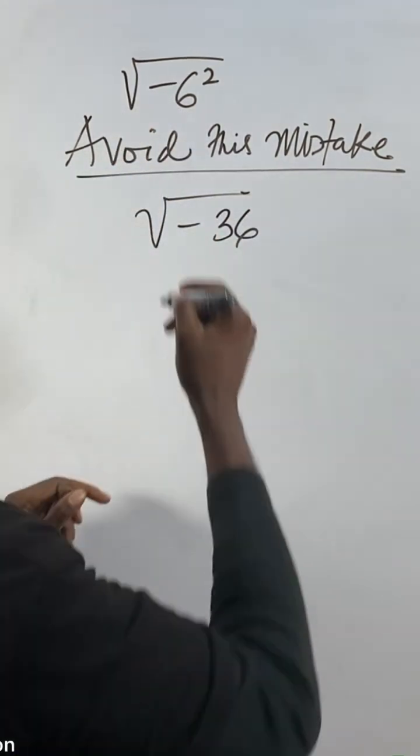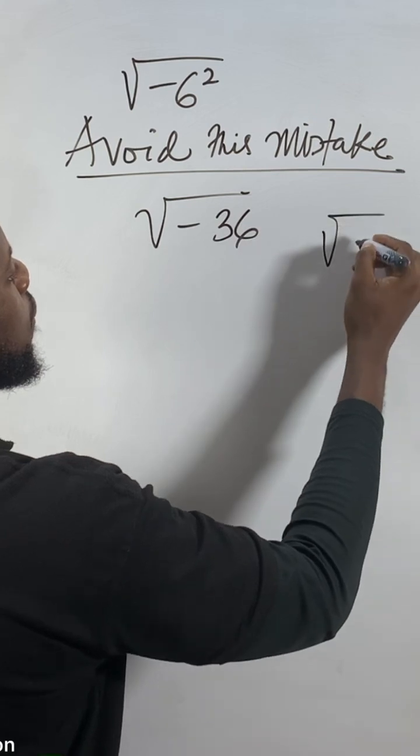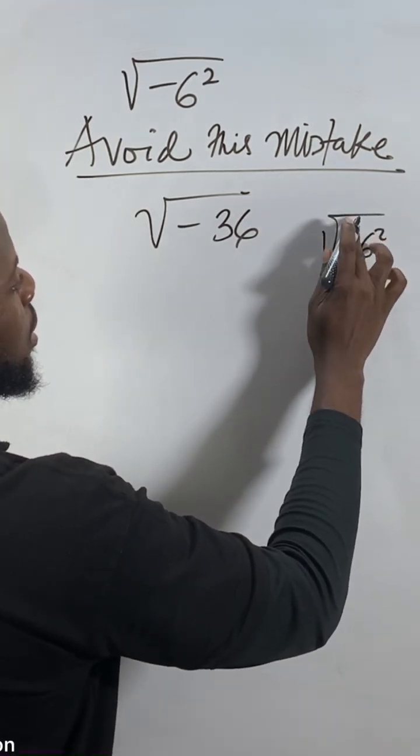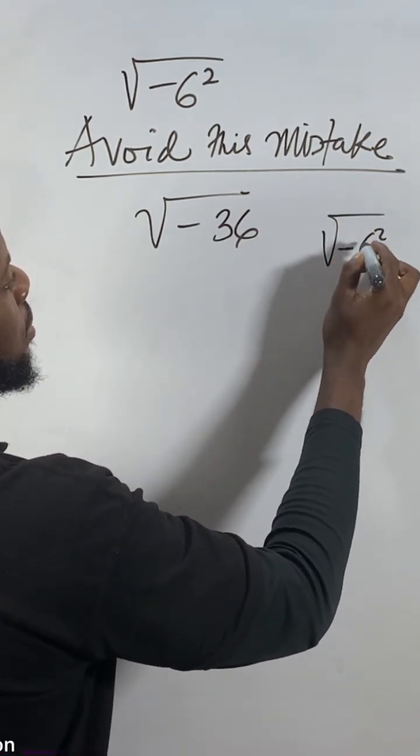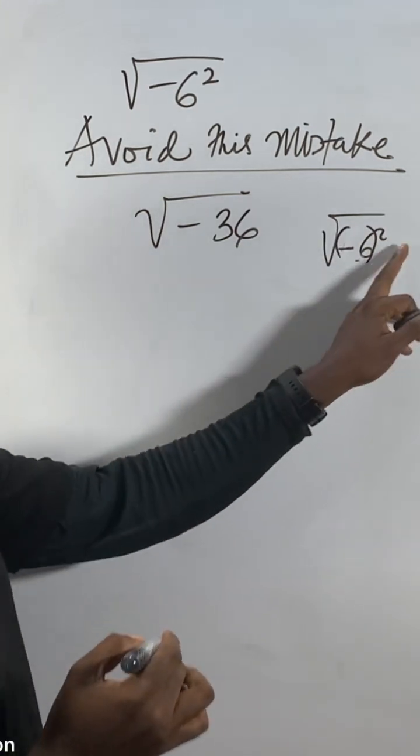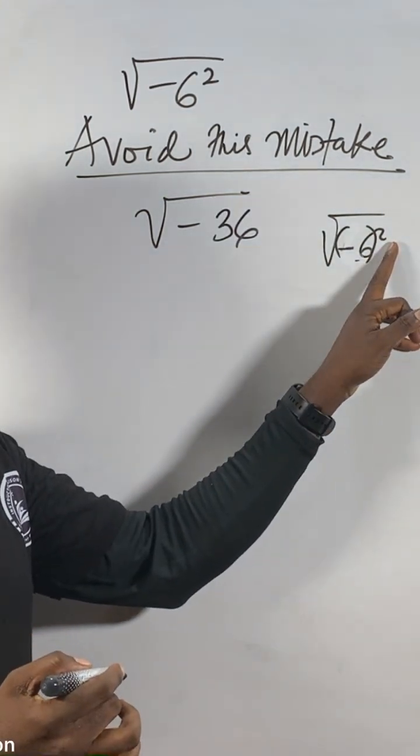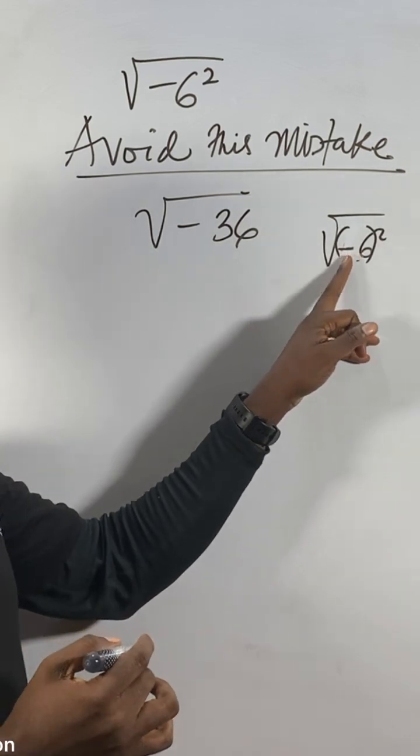What of this minus? You know then a difference between square root of minus six squared. When you do like this, minus six then squared gone the outside like this, then minus six gone inside bracket.